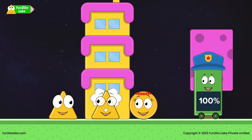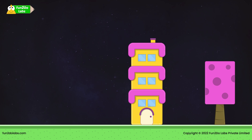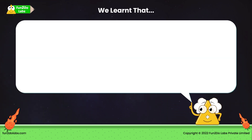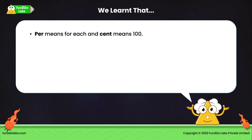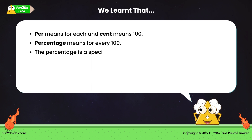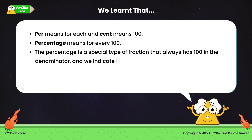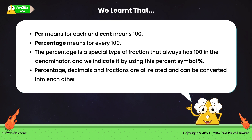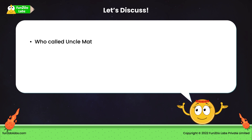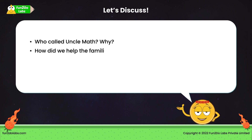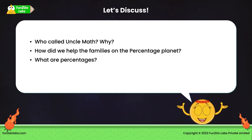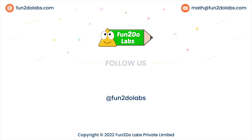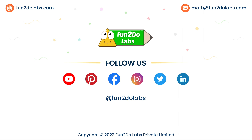Percentage Planet did not just teach the relationship between fractions, decimals, and percentages, but also taught the importance of loved ones. We learned that per means 'for each' and cent means 'hundred.' Percentage means 'for every hundred' and is a special type of fraction that always has hundred in the denominator, indicated by the percent symbol. Percentage, decimals, and fractions are all related and can be converted into each other. Follow us on Fun2DoLabs to enjoy more math stories, songs, and games.